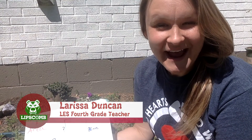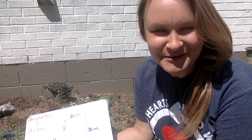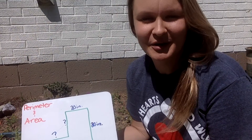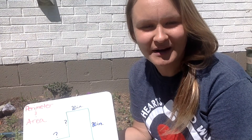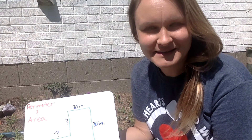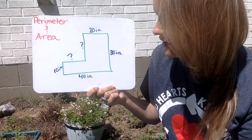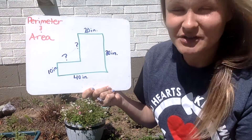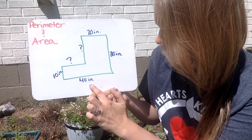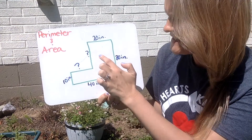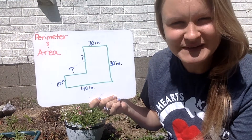Hi fourth graders, this is Mrs. Duncan from Lipscomb Elementary and I am going to do some math gardening with you guys today. I am trying to figure out the area and perimeter of my flower and vegetable garden, and this isn't your average garden. I have it in a funny shape, and I know the bottom of my garden is 40 inches and my side is 30 inches, but I have some missing sides. Can you help me figure those out?